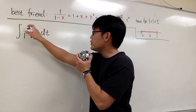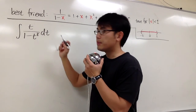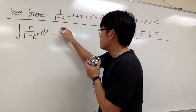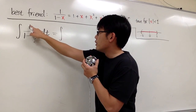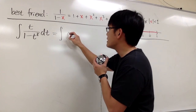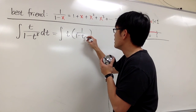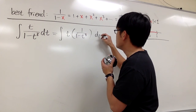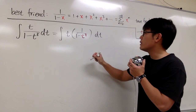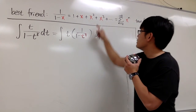The strategy is: we come up with a power series for the inside function, t over 1 minus t to the 8th power, and integrate that. We can put a t on the side and multiply it with 1 over 1 minus t to the 8th power. Then we focus on the t to the 8th power and plug it into our geometric series, because this matches our form.